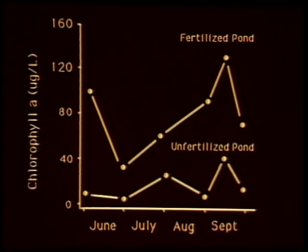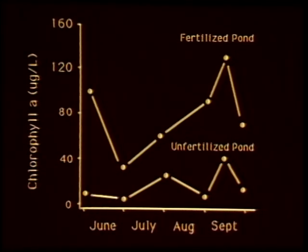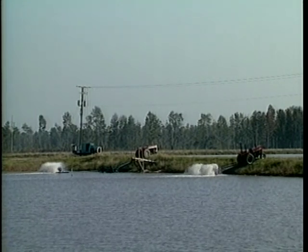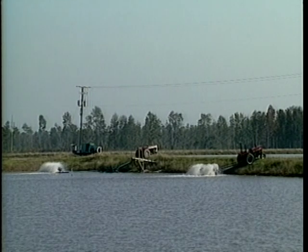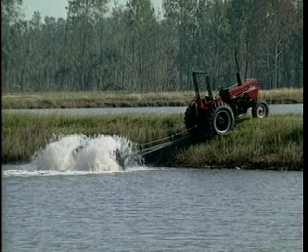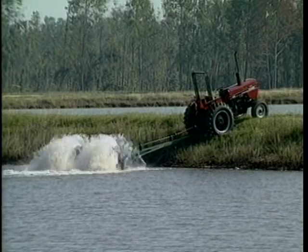Plankton communities are constantly changing in species composition and in abundance. For example, fluctuations in abundance are shown in this graph of chlorophyll A concentrations. As numbers of phytoplankton increase, the quantity of chlorophyll A increases. As shown in this graph, phytoplankton abundance reached maximum levels in the late summer months. Increased sunlight and warmer temperatures promote this increase in growth. Fertilizer also increases growth as is shown. Even though phytoplankton abundance may vary greatly through the year, fish production usually is not affected. However, during the warmer months phytoplankton blooms may increase greatly in density and then suddenly die. If this occurs, several problems involving oxygen concentrations may result. This subject will be discussed later in the video when we discuss dissolved oxygen.